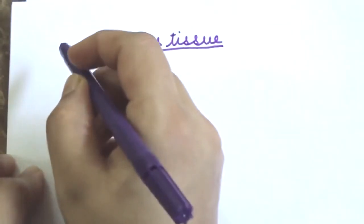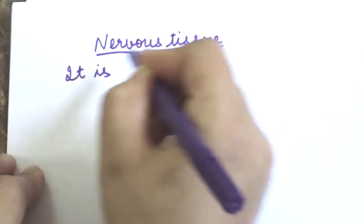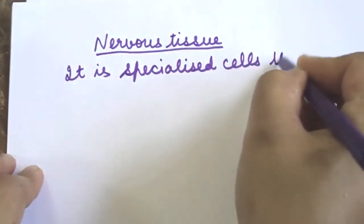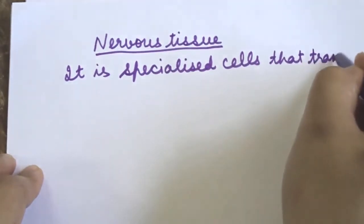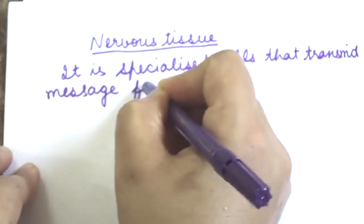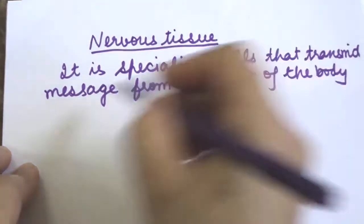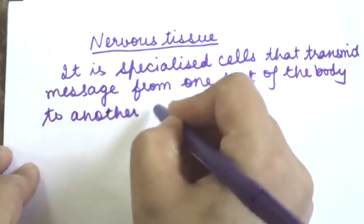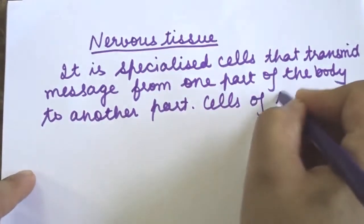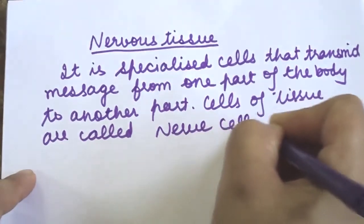What is Nervous Tissue? Nervous tissue consists of specialized cells which transmit messages rapidly from one part of the body to another part. Cells of the nervous tissue are called the nerve cells and neurons.